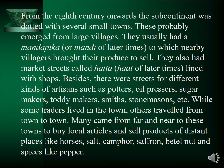From the 8th century onwards, the subcontinent was marked with small towns. These probably came out from the larger villages. They usually had a mandapika or a mandi, which came to be known in later times, to which nearby villages brought their produce to sell. They also had market streets called hata, lined with shops. There were streets for different kinds of artisans like potters, sugar makers, smiths, stonemasons, etc.